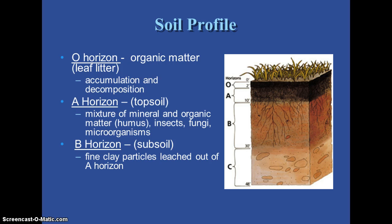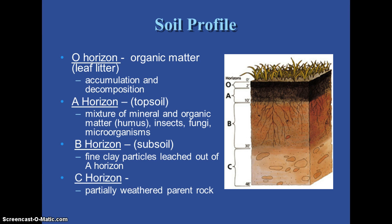The B horizon is subsoil — sub means under. When it rains and water seeps through the ground, it picks up those clay-sized sediments. Remember, clay is our smallest particle, and they seep down. So the B horizon consists of all those little particles that have leached down from the A horizon. The C horizon at the bottom is our partially weathered rock — that's the parent rock that we started with.